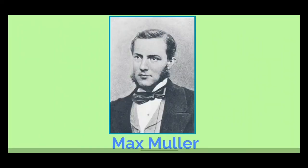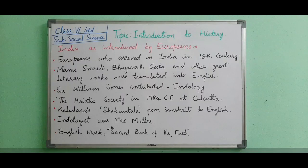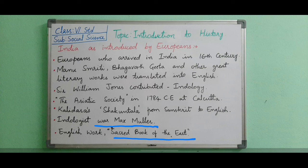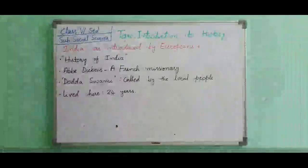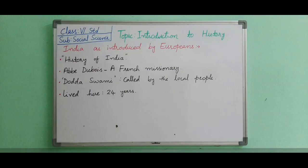Another prominent orientalist and Indologist was Max Muller — a German scholar who wrote an English book called Sacred Books of the East in 15 volumes. James Mill, a historian from Scotland, wrote History of India in six volumes. However, both of these scholars never actually visited India.